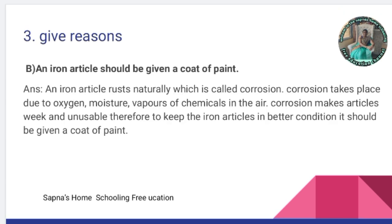Give reasons: an iron article should be given a coat of paint. Iron undergoes corrosion due to oxygen, moisture, vapor, and chemicals in the air. Corrosion makes articles weak and unusable. Therefore, to keep iron articles in better condition, they should be given a coat of paint. The paint prevents corrosion.